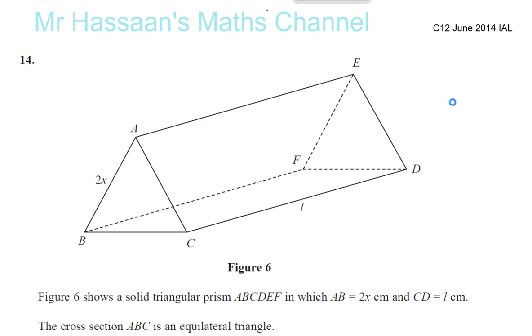Okay, so now June 2014 IAL C12, I'm going to answer question number 14, which is about this solid triangular prism. AB is equal to 2x, CD is equal to l. Now, the cross-section ABC is an equilateral triangle. So a few things we can just write down straight away. This is an equilateral triangle, that means all these three sides are the same. That's 2x, that's 2x, that's 2x.